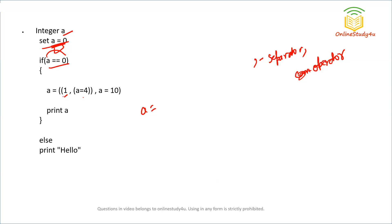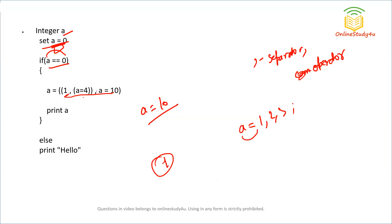Although comma has low precedence, brackets have the highest precedence, so we evaluate inside the brackets to the end. First a is set to 1, then to 4, and finally to 10. So the value of a becomes 10. If instead it was written without brackets — like a equals 1, 2, 3 — then only a equals 1 would be assigned due to comma's low precedence. But with brackets, the final value is 10, which is the correct output.